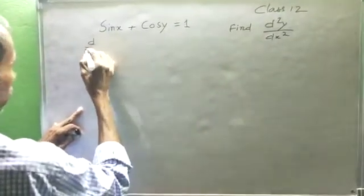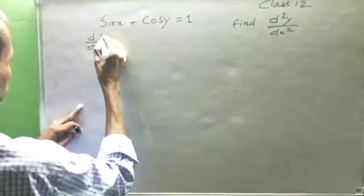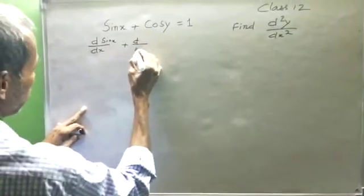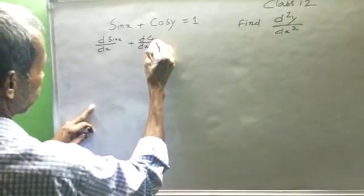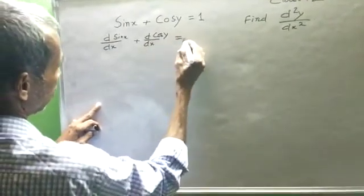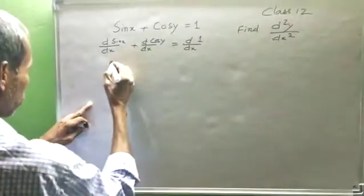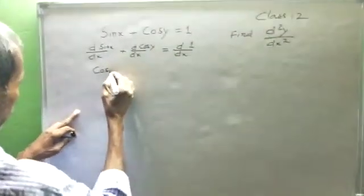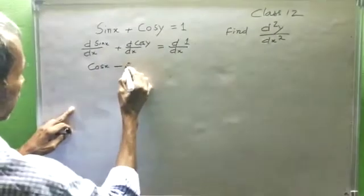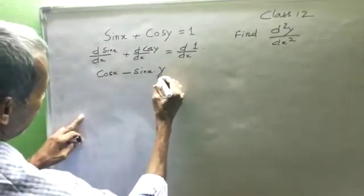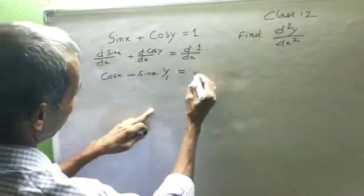d/dx of sin x plus d/dx of cos y equals d/dx of 1. This gives us cos x minus sin y times y₁ equals 0.